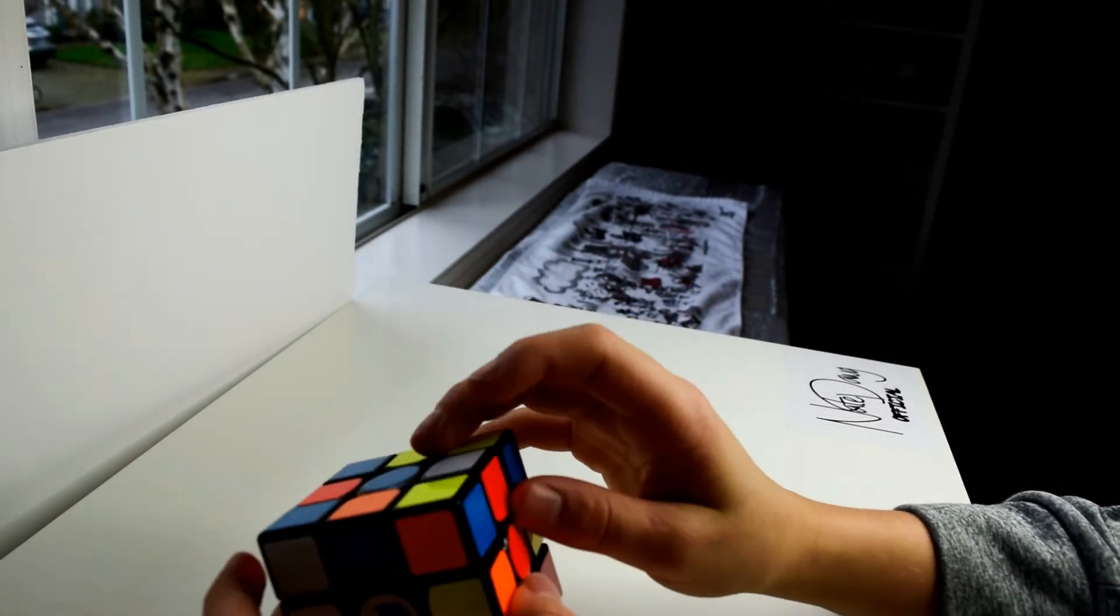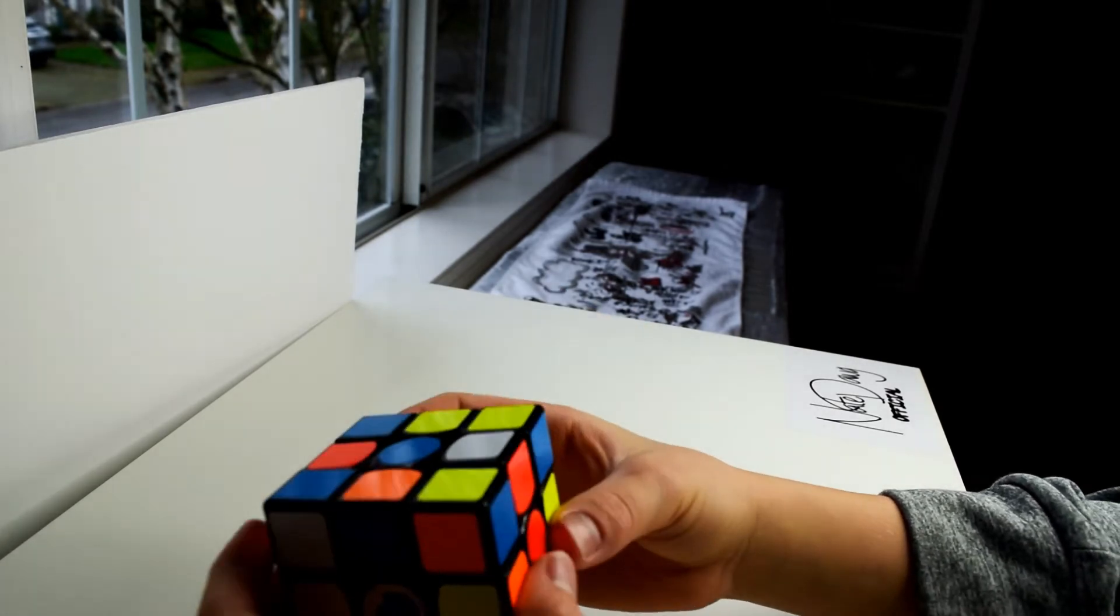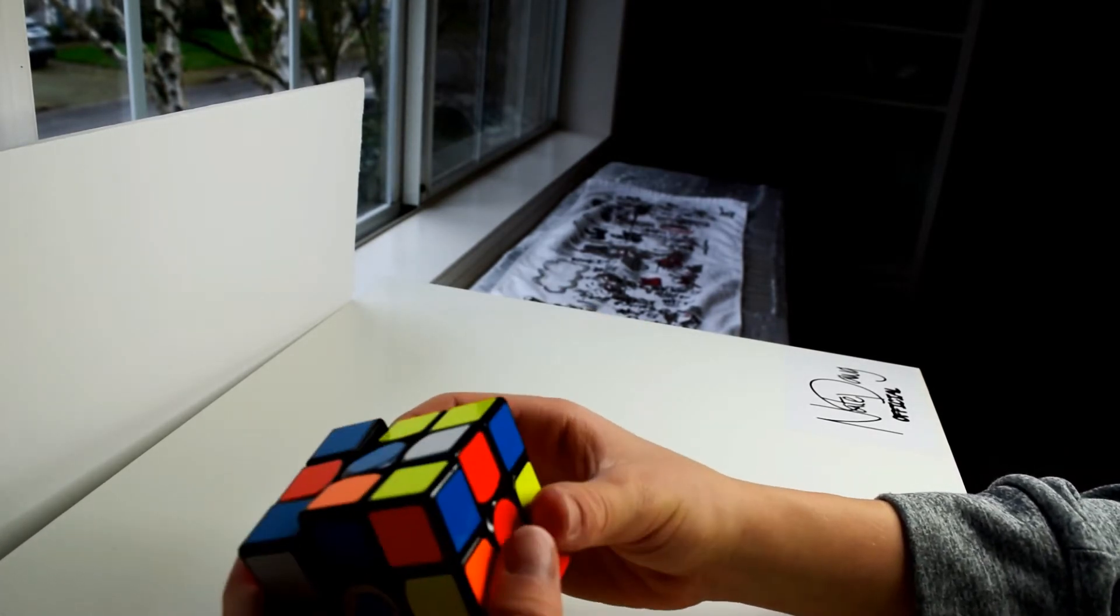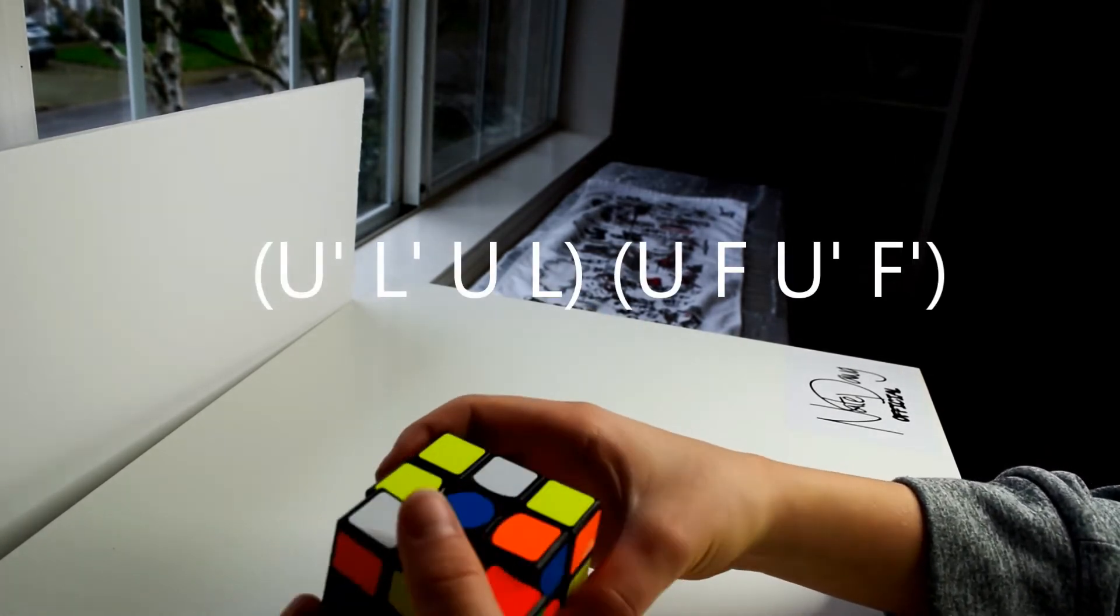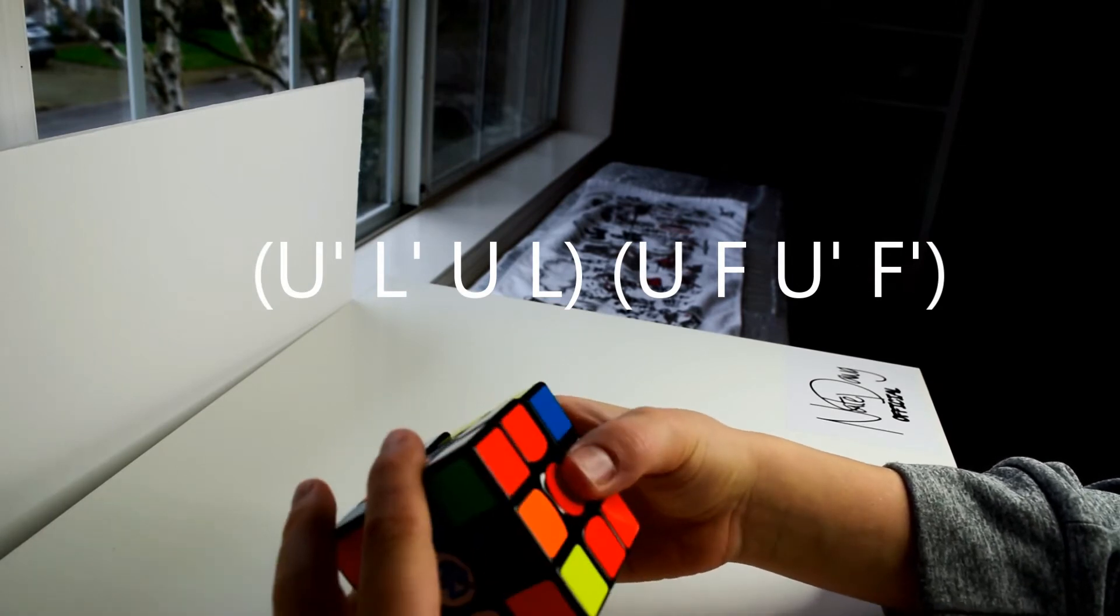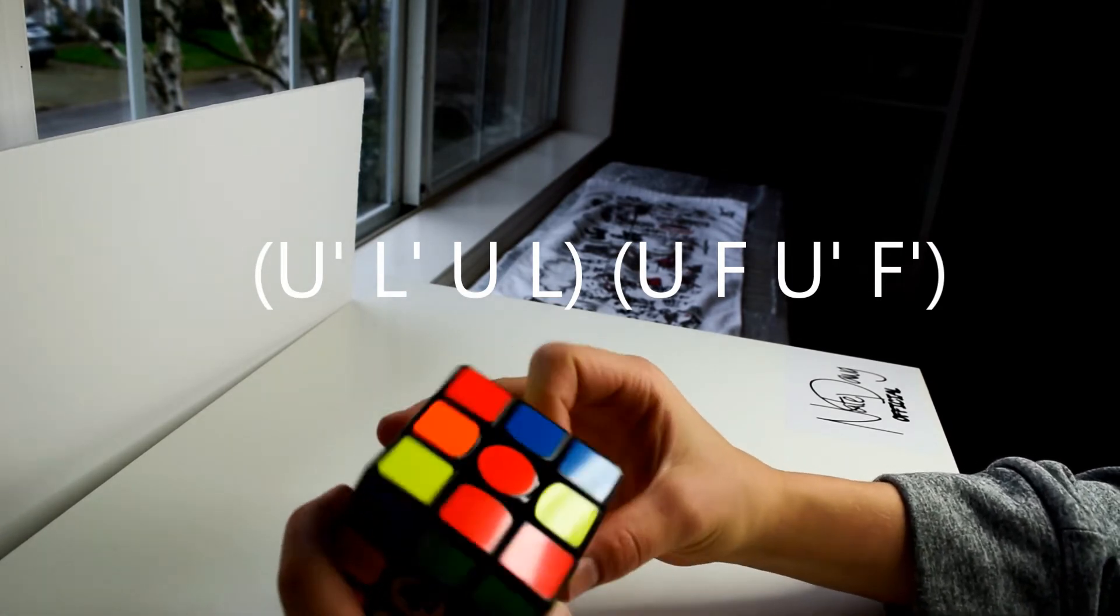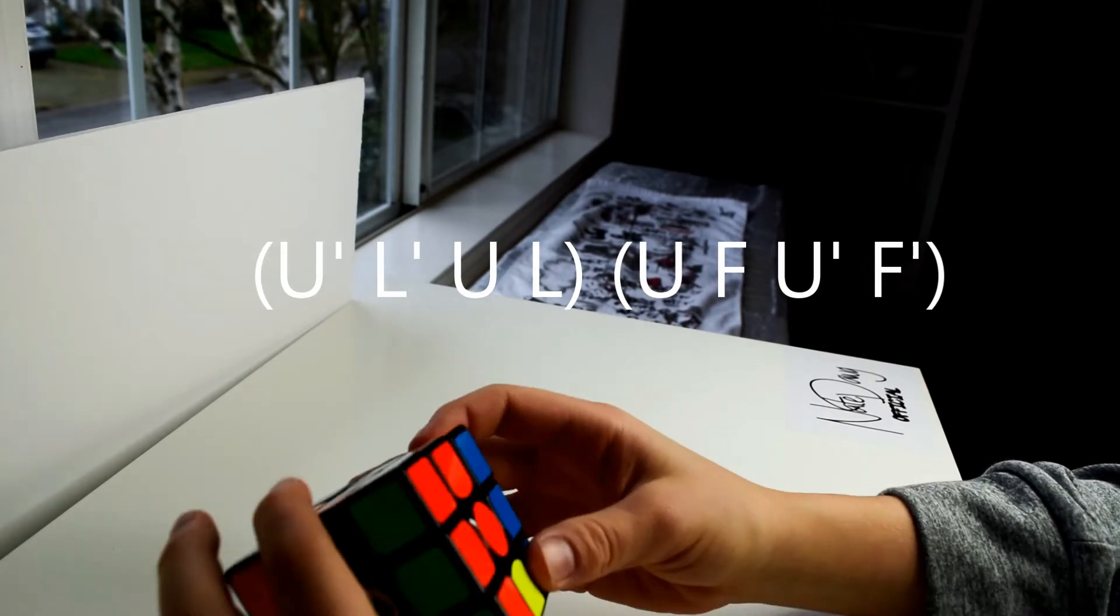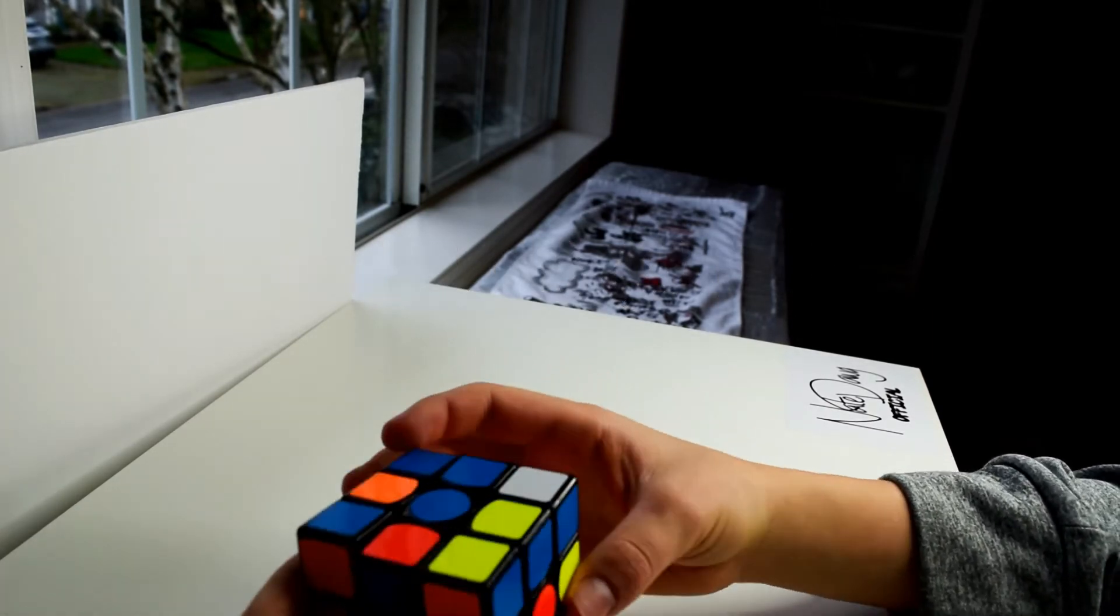So the algorithm for going to the left is: U inverted, L inverted, U, L, U, F, U inverted, F inverted. So it's filling it in right there.